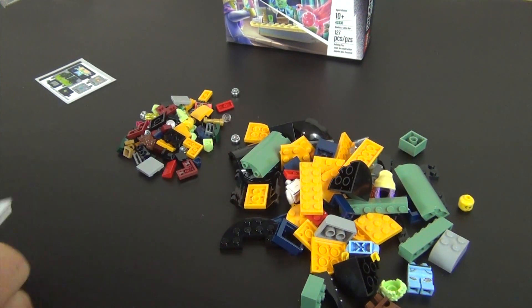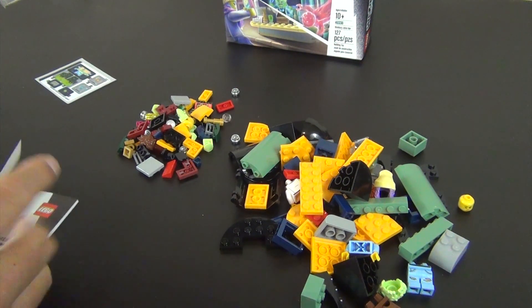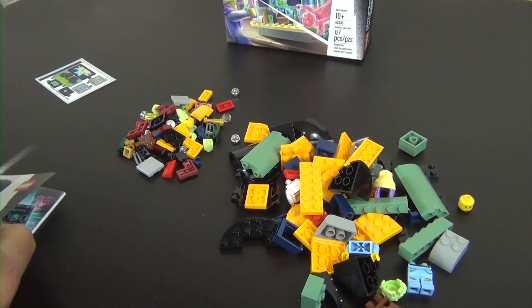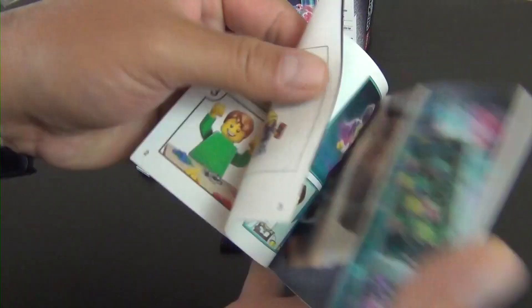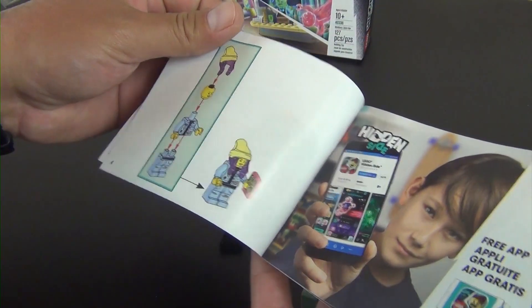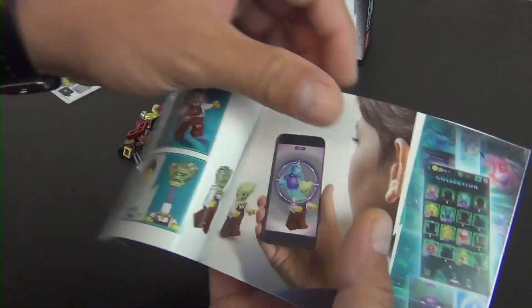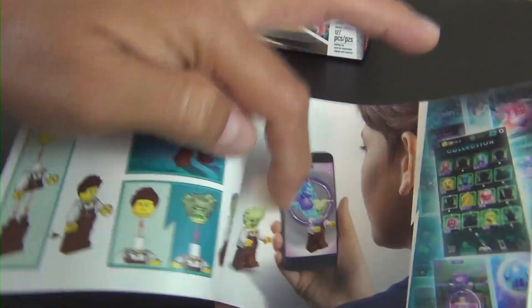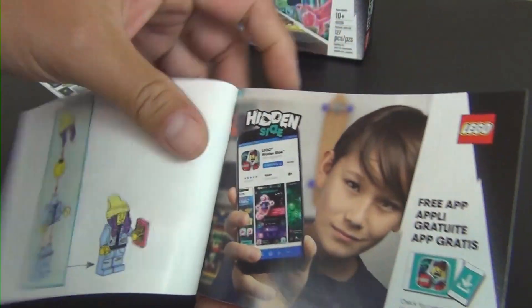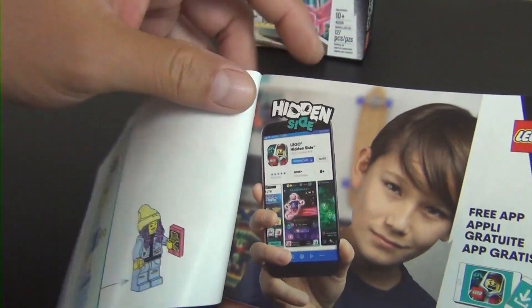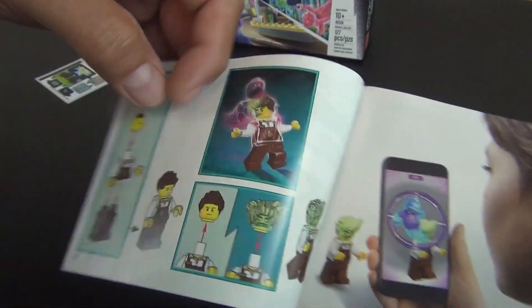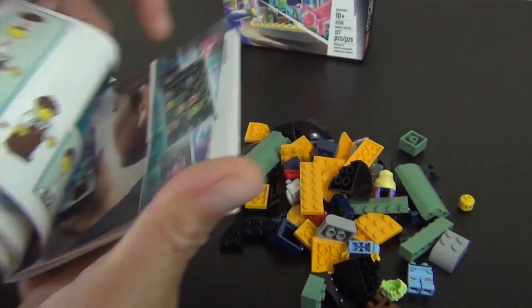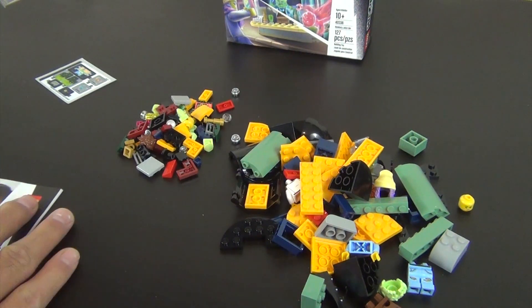Alright, so got the contents out. We do have some minifigures. It's interesting, the instruction book throughout the first couple pages is showing you kind of graphical ads for the app. There's this app that you can use with the Hidden Side. They're kind of trying to show you what the app does without too much words.